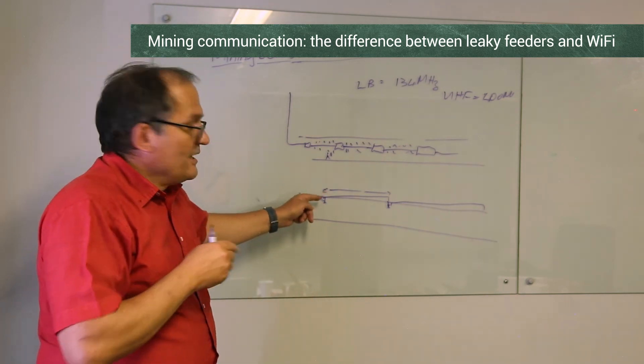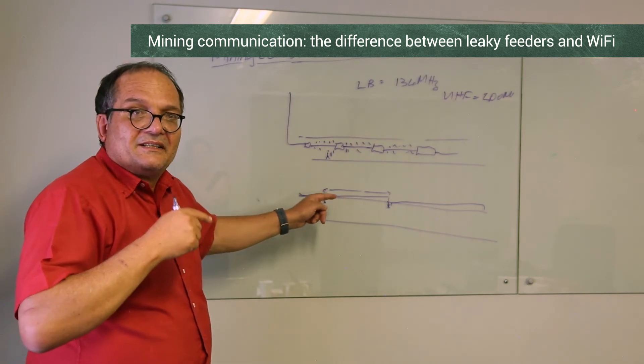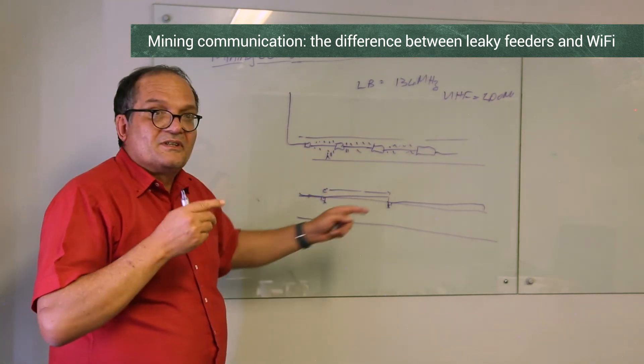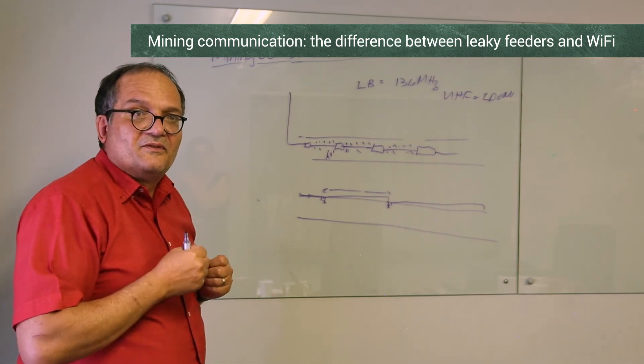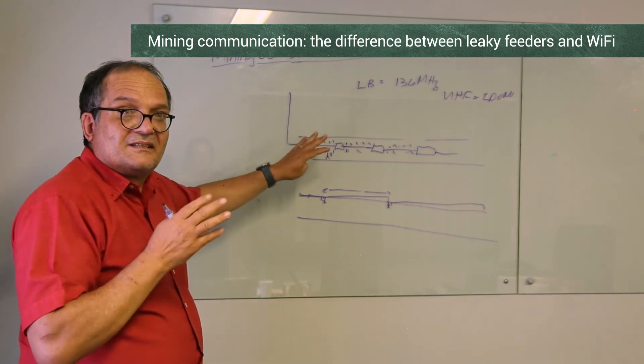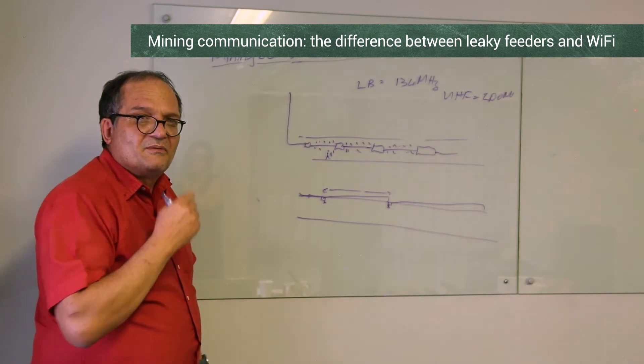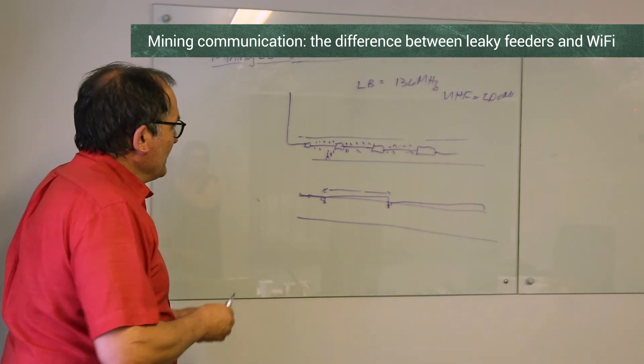You've got a cable modem, very well known in the USA, which converts it to WiFi. Then you can have those WiFi points, and that will be used for data, whereas the guys will still use the radios for voice. It's just for legacy systems—a very nice approach.